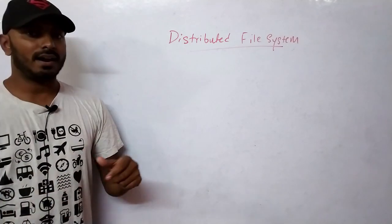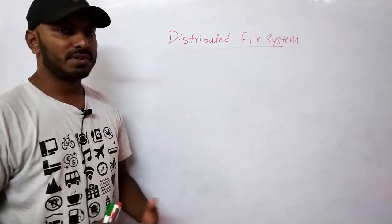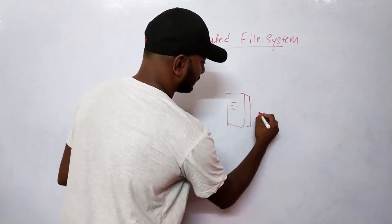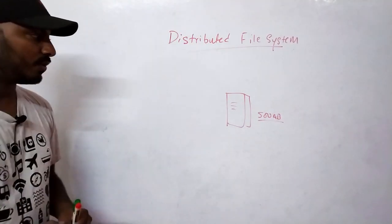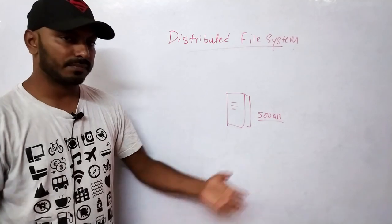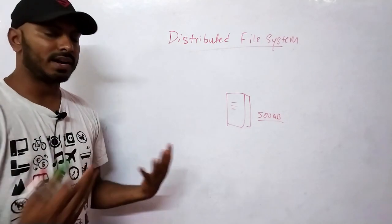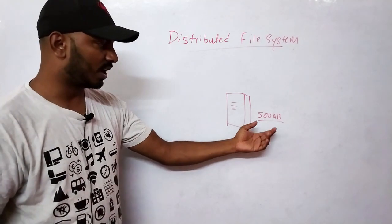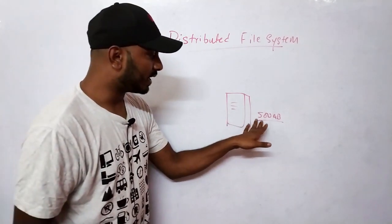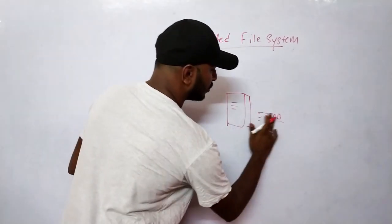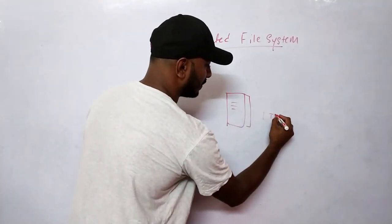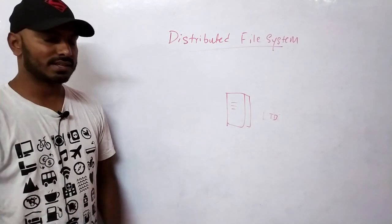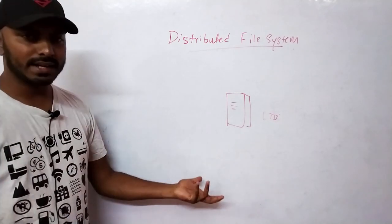Let's take an example to understand why we need a distributed file system. Say I have a CPU with a 500 GB hard disk — I can only save files up to 500 GB. But what if I have 700 GB of files? I can't save them. I'd have to upgrade to a 1 TB disk. And what if I have 10 TB of files?